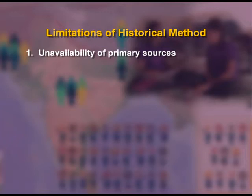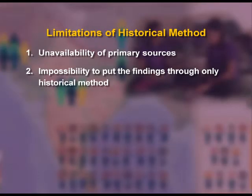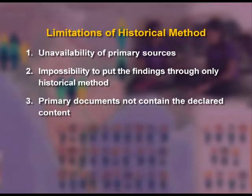Limitations of historical method: First, unavailability of primary sources — it is impossible to localize the source; the document may still be hidden, not registered, filed in the wrong place, or not stated in the inventory list. Second, impossibility to put findings through only historical method — contemporary witnesses are not alive and there is no other source of information. Third, primary documents not containing the declared contents — the content is in divergence from the document title.